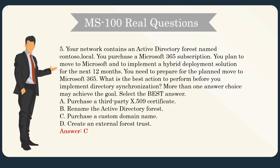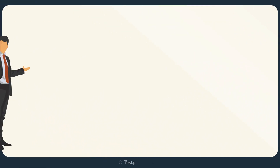Question 5. Your network contains an Active Directory forest named Contoso.local. You purchase a Microsoft 365 subscription. You plan to move to Microsoft 365 and implement a hybrid deployment solution for the next 12 months. You need to prepare for the planned move to Microsoft 365. What is the best action to perform before you implement directory synchronization? A. Purchase a third-party X.509 certificate. B. Rename the Active Directory forest. C. Purchase a custom domain name. D. Create an external forest trust. Answer: C — Purchase a custom domain name.